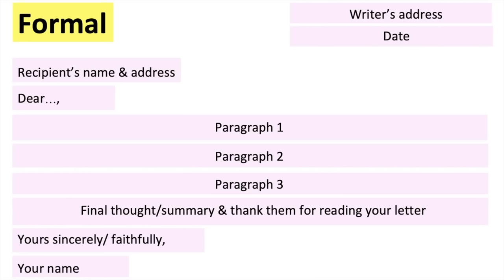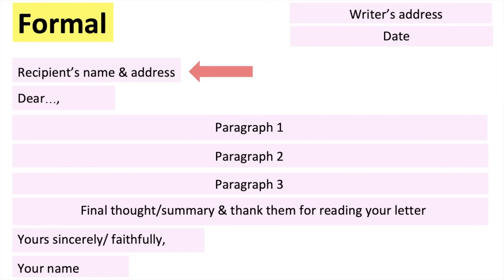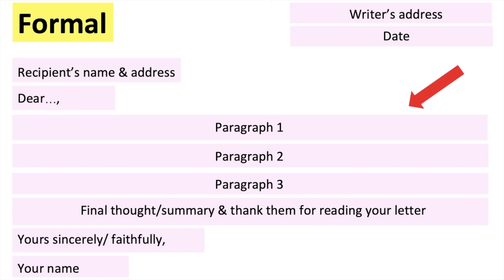Now let's go through the layout of a letter. In the top right-hand corner, we have the writer's address — so if you're writing the letter, this would be your address. Below this is the date. Below that, in the left-hand corner, is the recipient's name and address — this is the person that you're writing to. Below that, we start to begin the letter, initially with the greeting and an opening for the letter. Then we start off with reasons for writing and providing information about the points we're making.